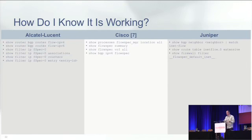So if you've set this up, how do you know it works? I've put together some show commands across all three vendor examples — things you can look at to see whether flow spec routes are being generated, announced, received, and ultimately whether your firewall filters are being created in the forwarding plane and getting hits against them.